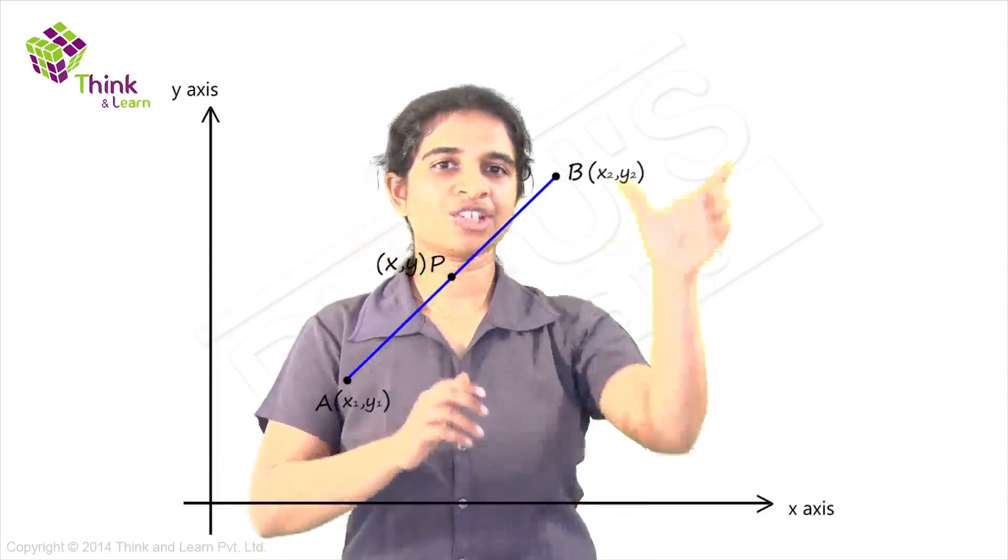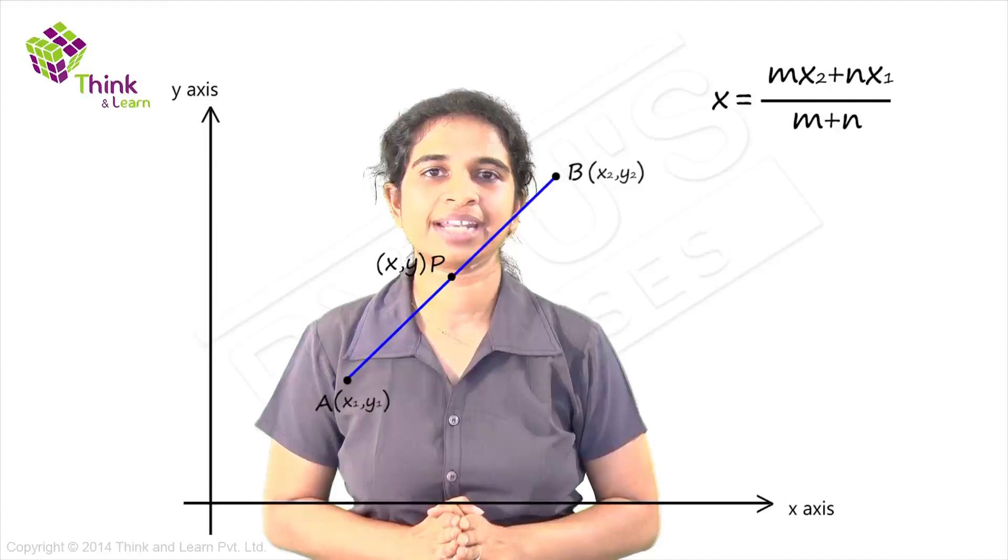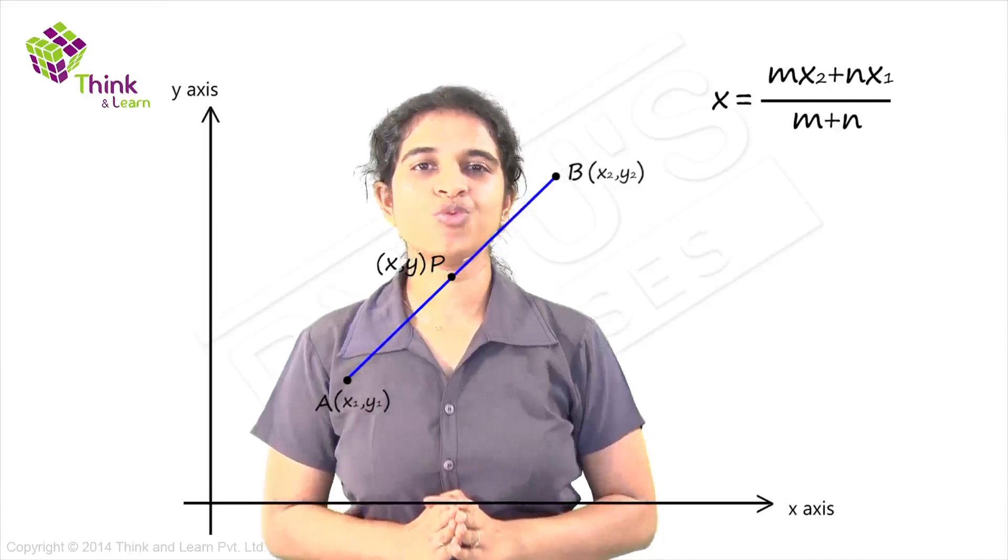Now we know from the section formula that x is mx2 plus nx1 divided by m plus n. Let's see if we can visualize this.